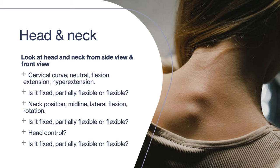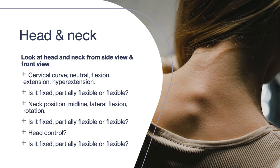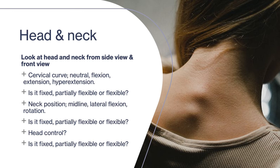Then we get to the head and neck. Assess from all positions — front, sides and back — and take photographs if you get permission. Assess the cervical curve: is it neutral, is there flexion, extension or hyperextension? Remember to assess whether it is fixed, partially flexible or flexible. Assess the neck position: is it neutral, is there lateral flexion or rotation? Again, is this fixed, partially flexible or flexible? Finally, assess head control — does the person have head control or are they completely dependent?